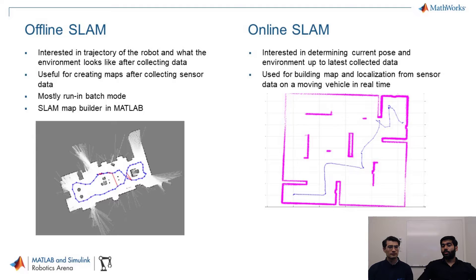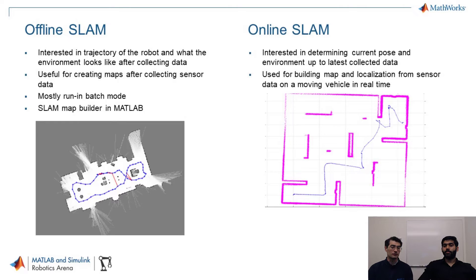When you are navigating in unknown spaces, you need to get your position and landmarks at that time instant. So the main difference is: if you have access to the environment you're going to navigate, you might consider offline SLAM. If you're not going to have access and need to recognize the environment without any previous travel of the robot, then you would use online SLAM.